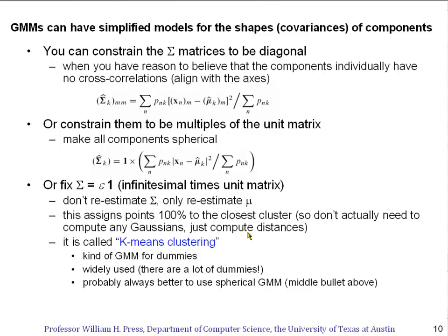So k-means clustering, we see, really is a special case of Gaussian mixture models. It's kind of Gaussian mixture models for dummies. It's very widely used. Here I'm going to be a little bit opinionated: it's widely used because there are a lot of dummies. I think that you're probably always better off doing this middle bullet, in other words allowing there to be a finite covariance even if you're going to constrain it to be spherical. There's really not much more work in that than doing k-means clustering, and I think that it probably gives better answers more of the time. Thank you very much.